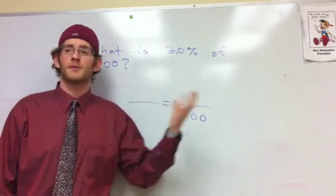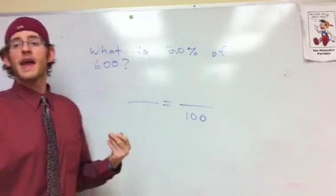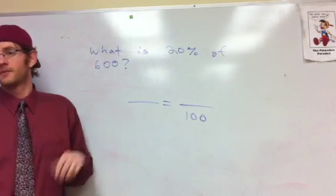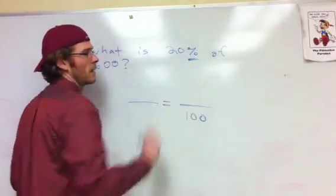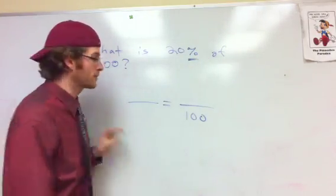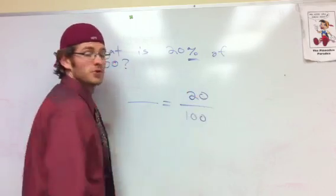Now we have to start looking at the problem and taking information out of the problem. What information are you taking out of the problem? 20% goes above 100. Any number that has a percentage sign attached to it in the problem goes above the 100 on the right side, correct?